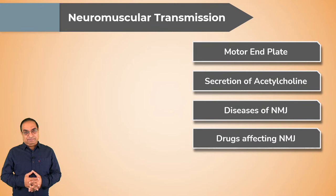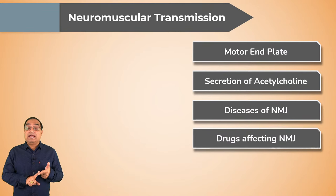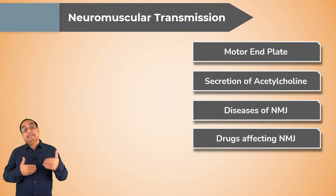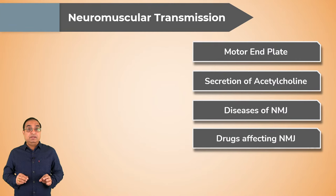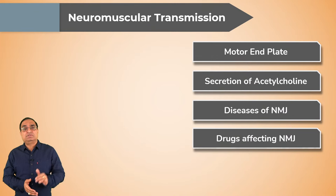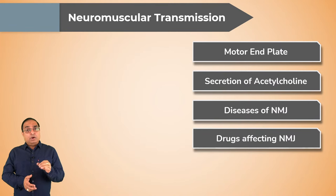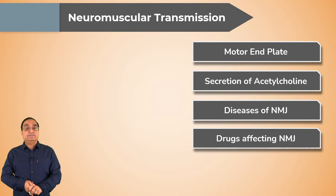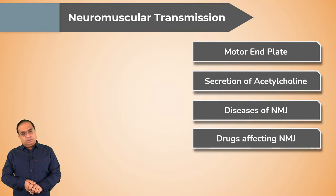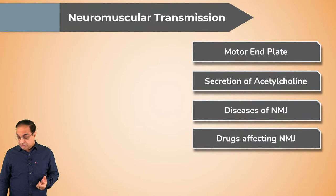Today's topic is Neuromuscular Transmission. What do we have to study? Motor End Plate — you should know what happens; how acetylcholine is secreted. We will also discuss diseases of the NMJ — Neuromuscular Junction. Two important diseases we will discuss are Myasthenia Gravis and Lambert-Eaton Syndrome, and after that, drugs which affect the neuromuscular junction.